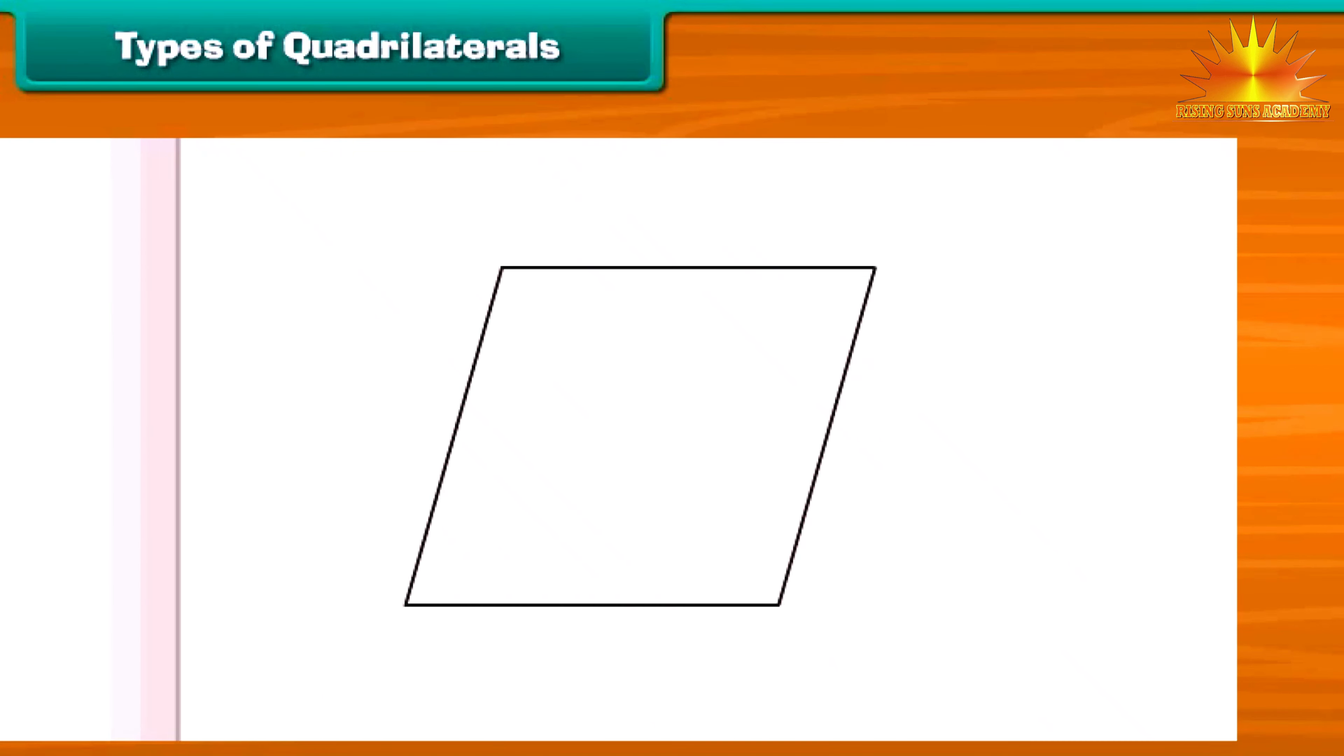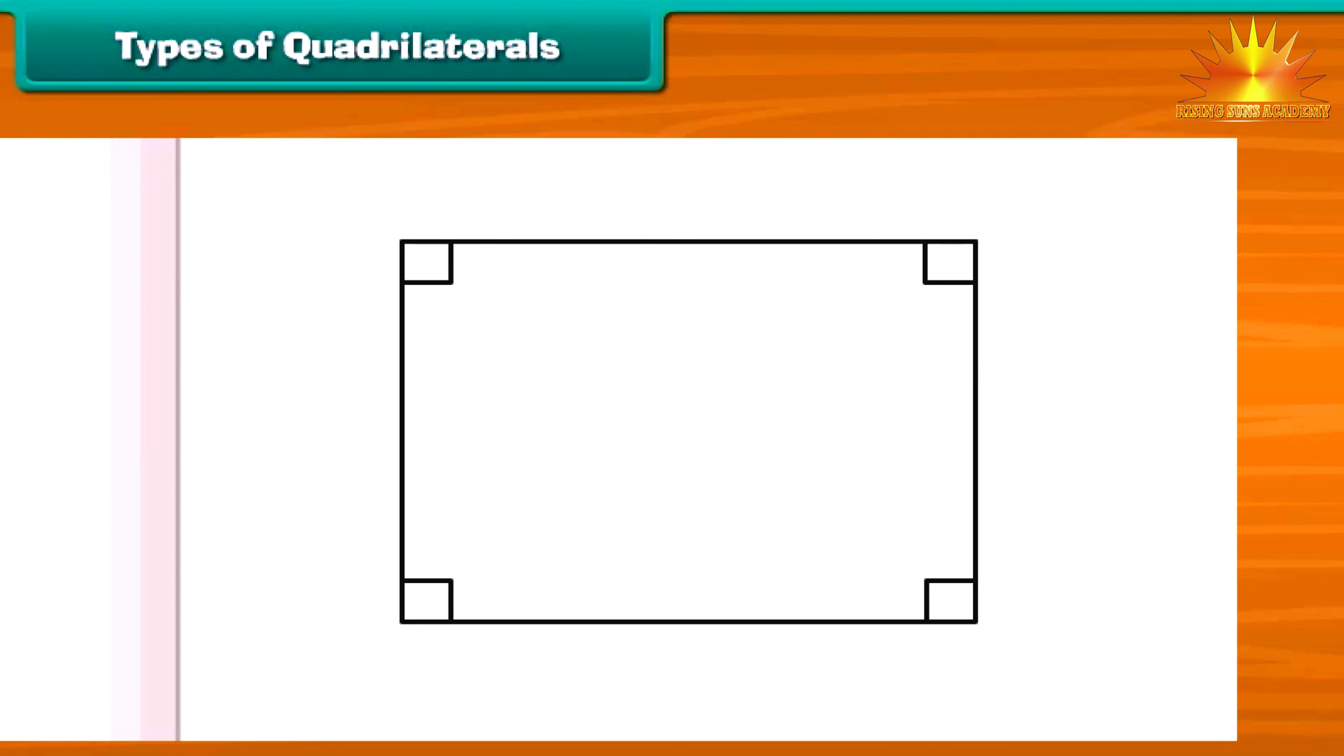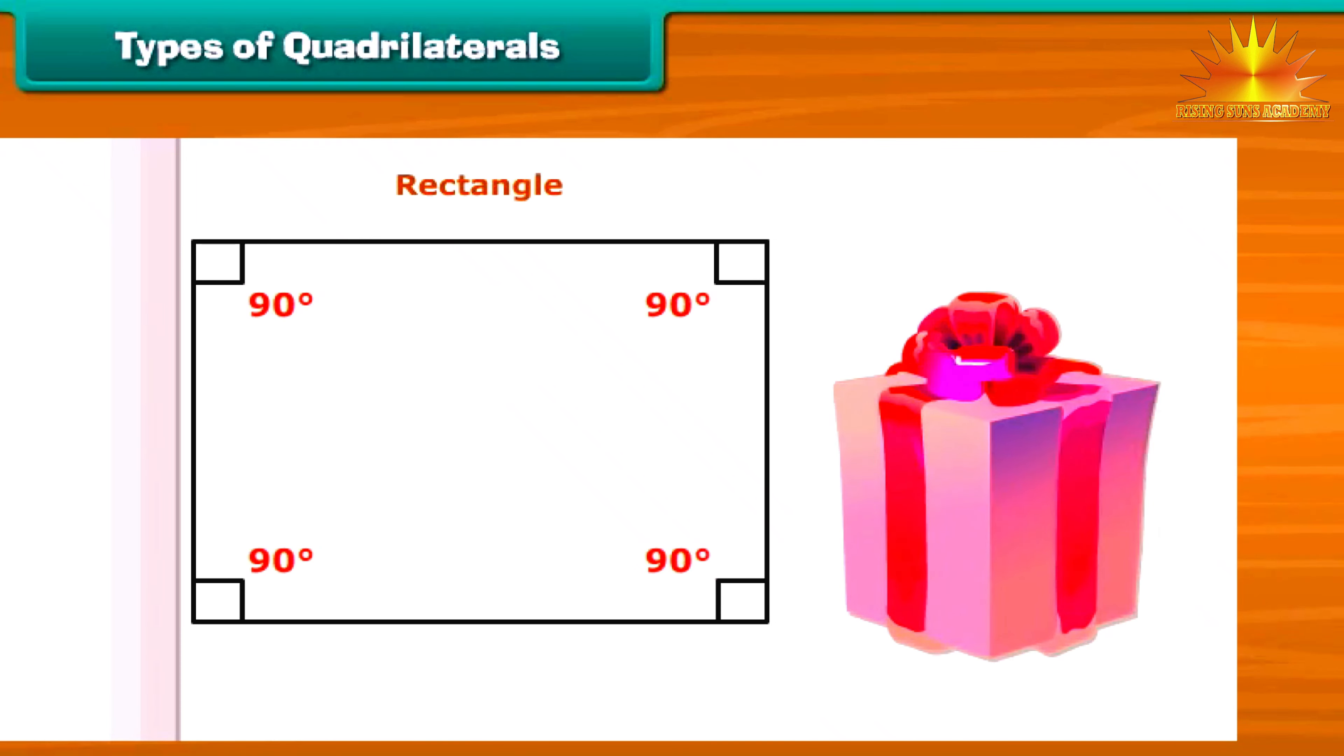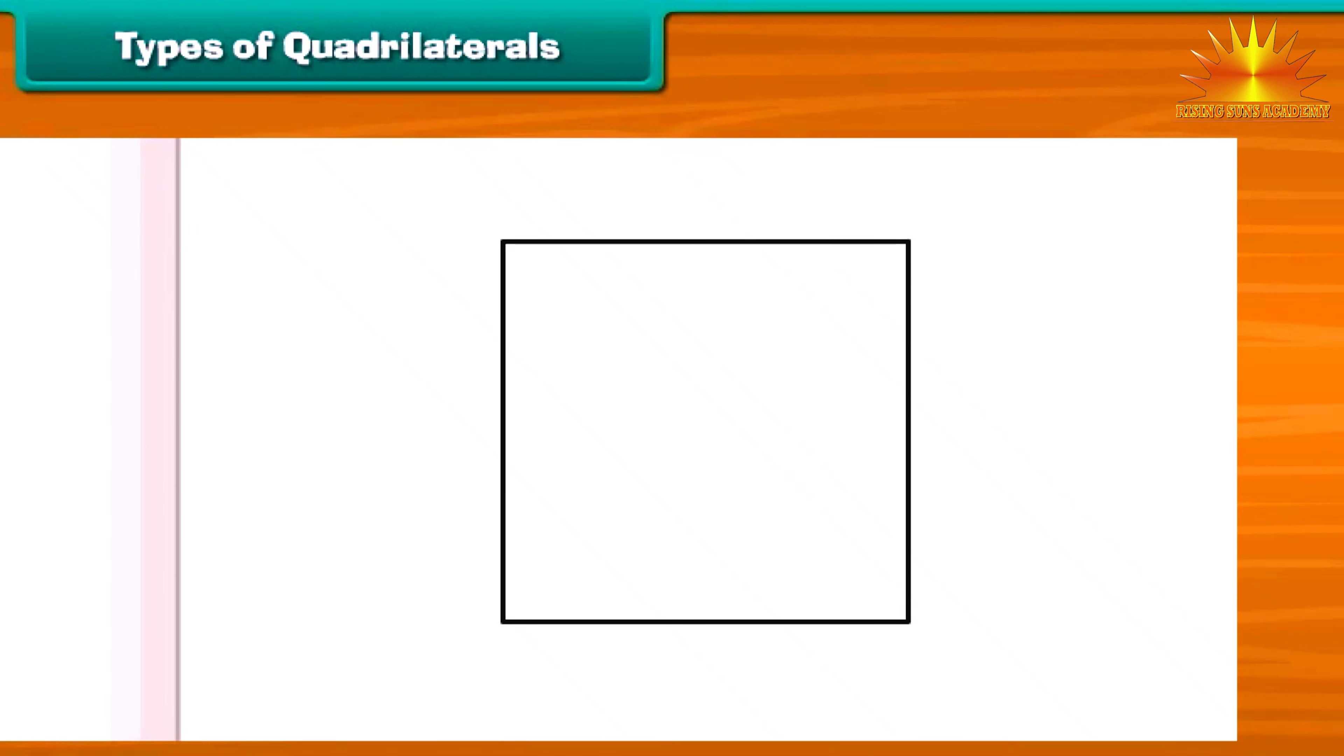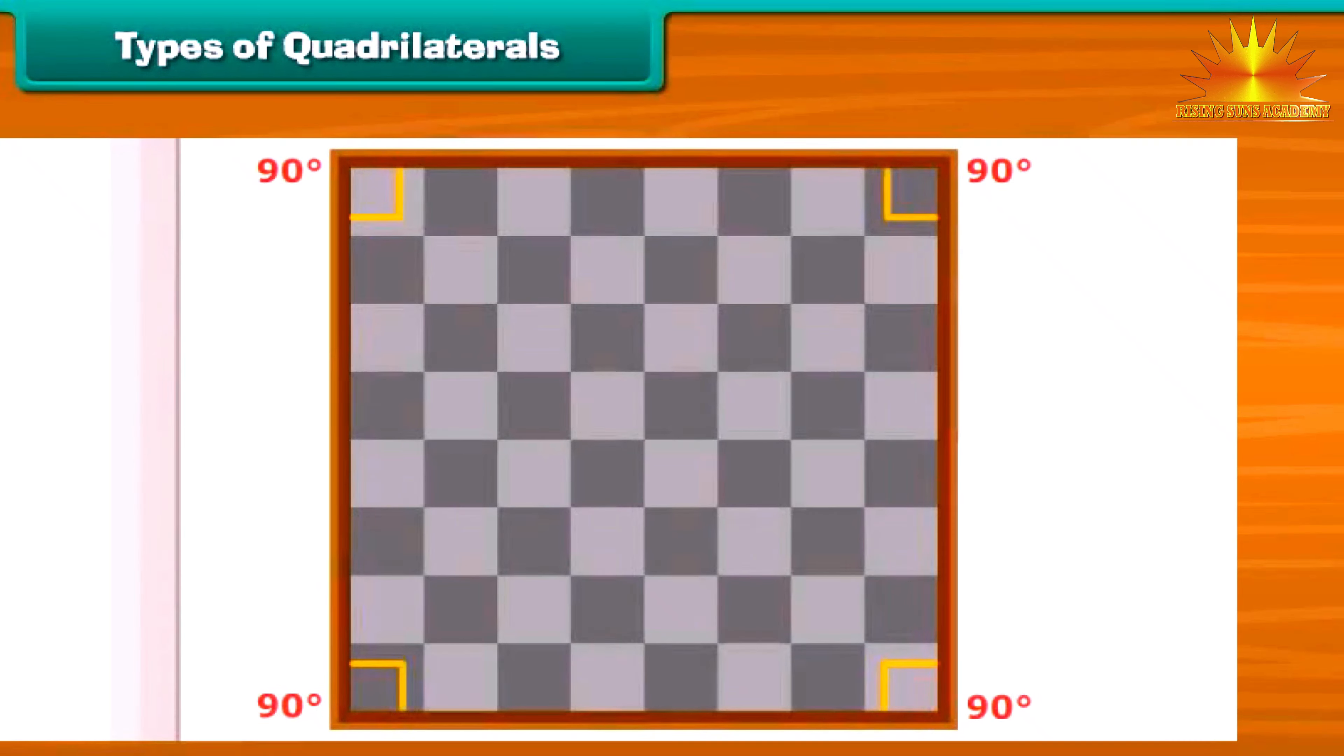A quadrilateral having opposite sides parallel is called a parallelogram. For example, slide is a parallelogram. A parallelogram in which all four sides have the same length is called a rhombus. Look at this painting. This is a rhombus. A parallelogram in which all angles are right angles, that is 90 degrees, is called a rectangle. For example, this gift pack is a rectangle. A square is a parallelogram in which all angles are right angles and all sides have same length. Hey friends, do you enjoy playing chess? Look at the chess board. It is square in shape.